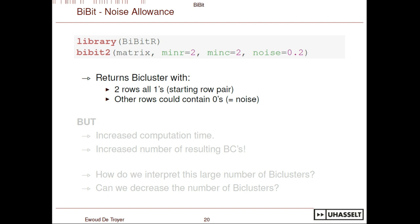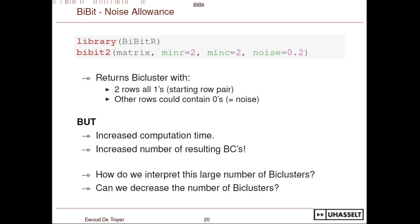What it returns is a bi-cluster in which the two starting rows are all ones, and all other rows can contain zeros. However, this brings increased computation time, and more importantly, a very large increase in the number of resulting bi-clusters — you will find a lot. So the question is: how can we interpret this large amount? Is there a way to decrease this number of bi-clusters?